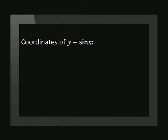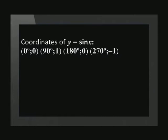The main coordinates for a standard sine function are: (0, 0), (90, 1), (180, 0), (270, -1), and (360, 0).